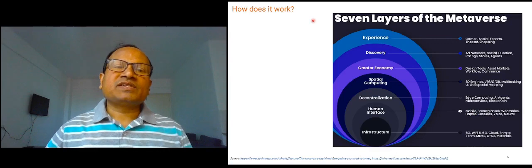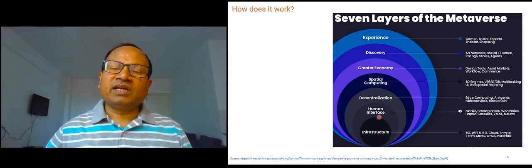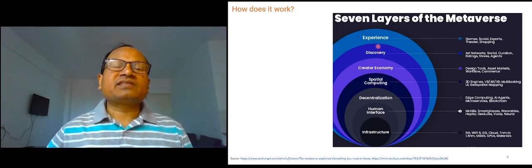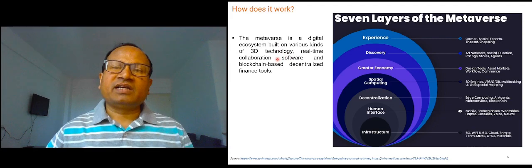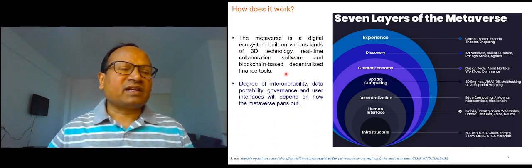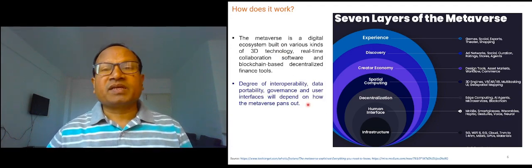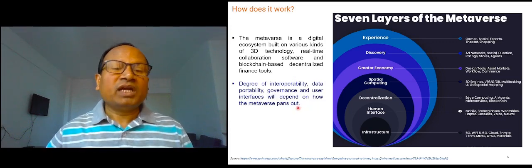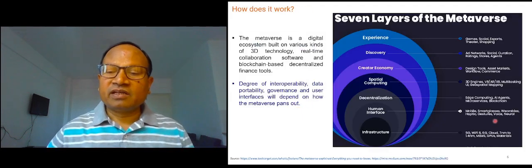How does it work? It has seven layers: infrastructure, human interface, decentralization, spatial computing, creator economy, discovery, and experience. Metaverse is a digital ecosystem built on various kinds of 3D technology, real-time collaboration software, and blockchain-based decentralized finance tools. The degree of interoperability is very important in the operation of the metaverse. Data portability, governance, and user interfaces will depend on how the metaverse pans out.